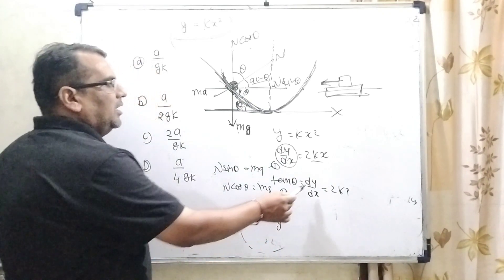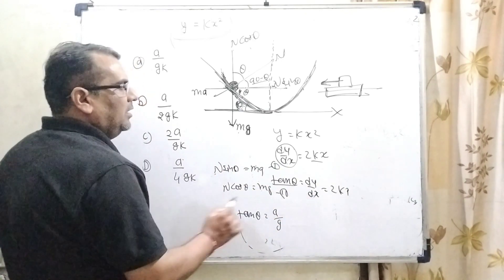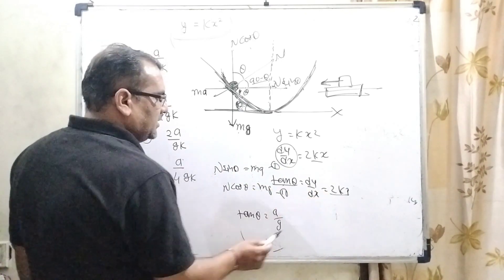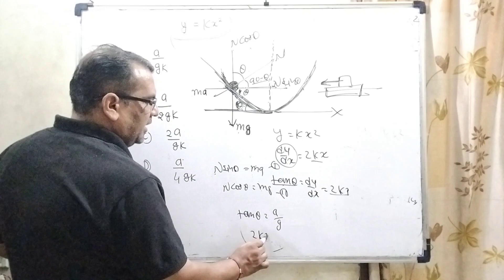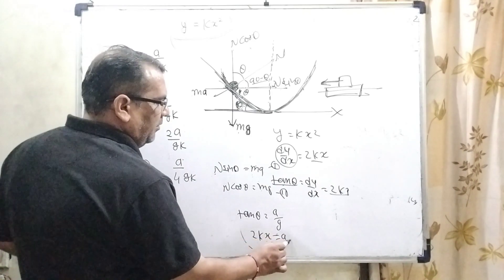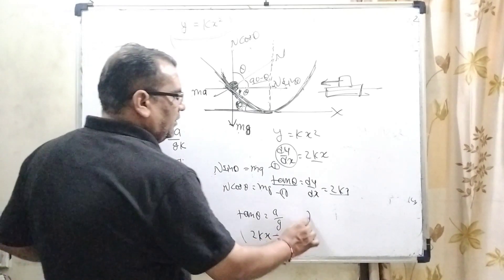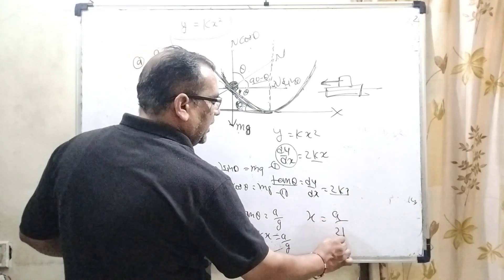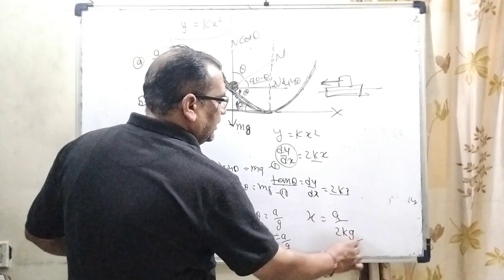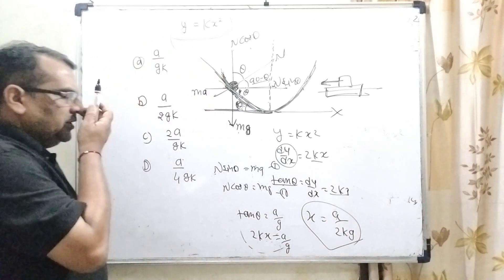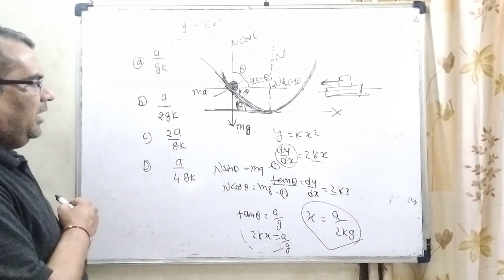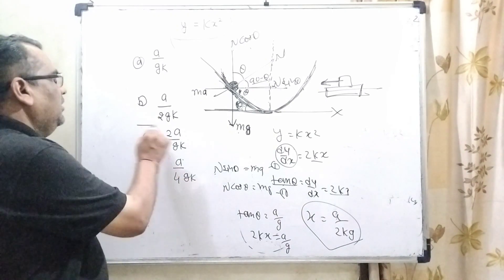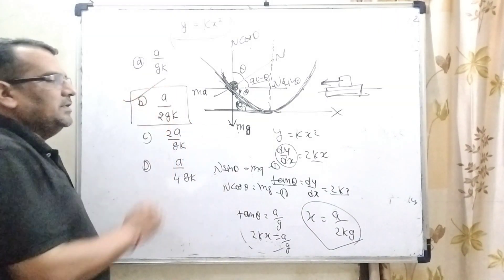Here you know that very well dy by dx is called tan theta, and tan theta equals 2kx. So here 2kx equals a by g, then x equals a by 2kg. Let's see which option is matching here: a by 2gk. Here option B is the correct answer.